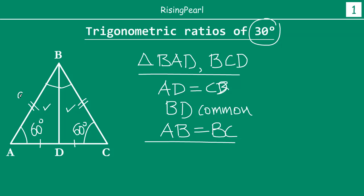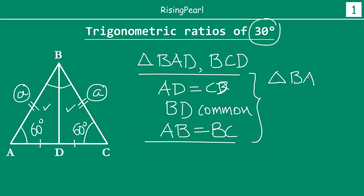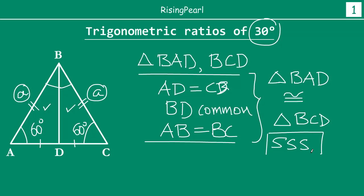So if this side is A, then this side is A as well, and so is the side AC. From the SSS congruence rule, we can say that triangles BAD and BCD are congruent triangles by the SSS (side-side-side) congruence theorem.